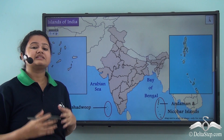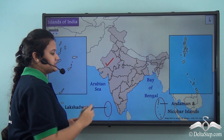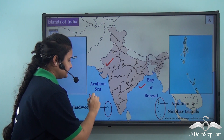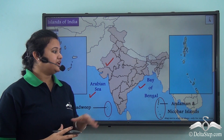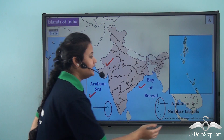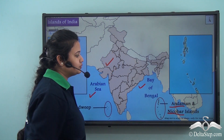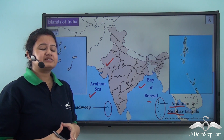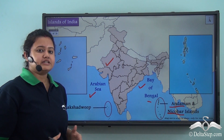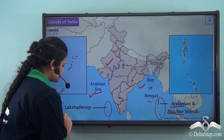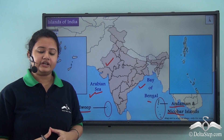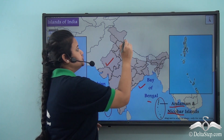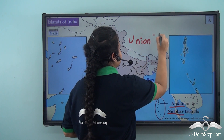The two major groups of islands belonging to the Indian subcontinent are one lying in the east amidst the Bay of Bengal and one lying to the west in the Arabian Sea. The group of islands lying to the east of mainland India is the Andaman and Nicobar Islands, situated amidst the Bay of Bengal. The group lying to the west of mainland India amidst the Arabian Sea is Lakshadweep. Both Andaman and Nicobar Islands and Lakshadweep are important union territories of India.